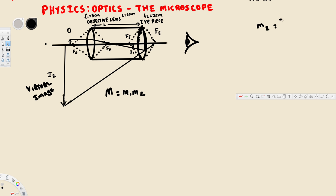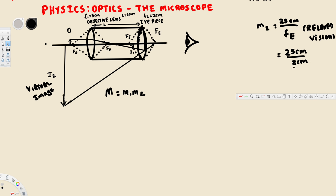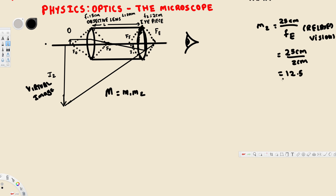For a magnifying glass, the magnification formula for relaxed vision is M2 equals 25 centimeters divided by the focal length of the eyepiece (FV). The 25 centimeter value is assumed for an average person's near point. Since the focal length of the eyepiece is 2 centimeters, M2 equals 25 divided by 2, which gives 12.5. The units cancel, so the magnification is 12.5.